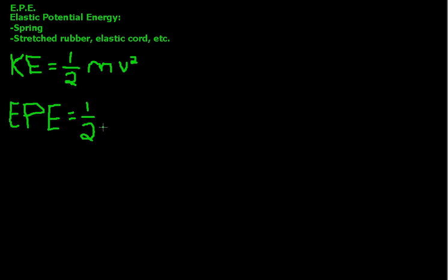The elastic potential energy is one-half times K times X squared. So it's extremely similar to the kinetic energy formula — it's just a bit different, because mass became K, velocity became X, and kinetic energy became the elastic potential energy.